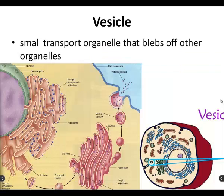Vesicles — we just talked a lot about vesicles. They're involved with the smooth and rough ER, the Golgi, and the plasma membrane. These are small transport organelles and they can just bud right off other organelles. Vesicles are basically for transporting things, not storing them — just transporting. Think of it like your book bag: you carry it around all day, so think of it as transport. Make sure you have vesicles on your worksheet and bingo board.